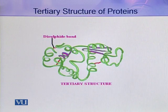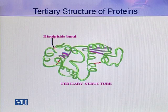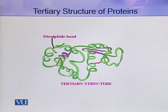Here you can see a single polypeptide chain that has assumed the tertiary structure by folding back and forth, assuming a fully functional three-dimensional structure. In this structure, you can easily see the disulfide bonds that have been formed between different amino acids of the same polypeptide chain.